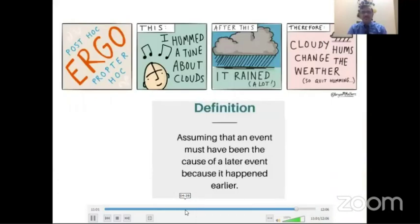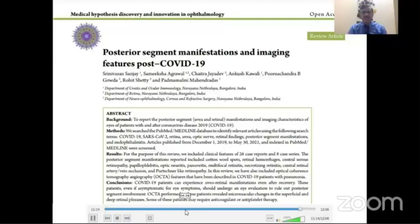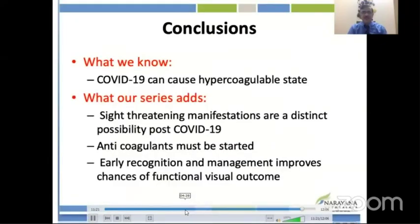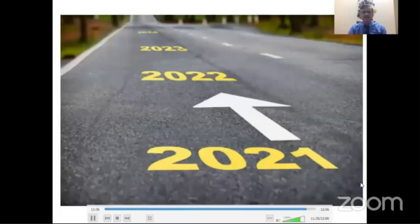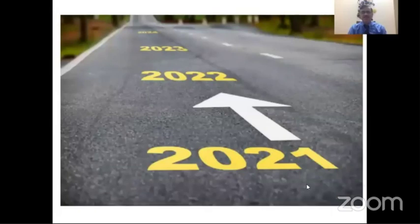Just because an event occurs after COVID does not mean it is attributable to COVID — we must prove no other risk factors caused the vascular occlusion. In conclusion, COVID can cause hypercoagulable states; our series adds that sight-threatening manifestations are a distinct possibility post-COVID. Anti-coagulants must be started early. As of 2022 we are also seeing more occlusions following vaccination, which must be kept in mind.